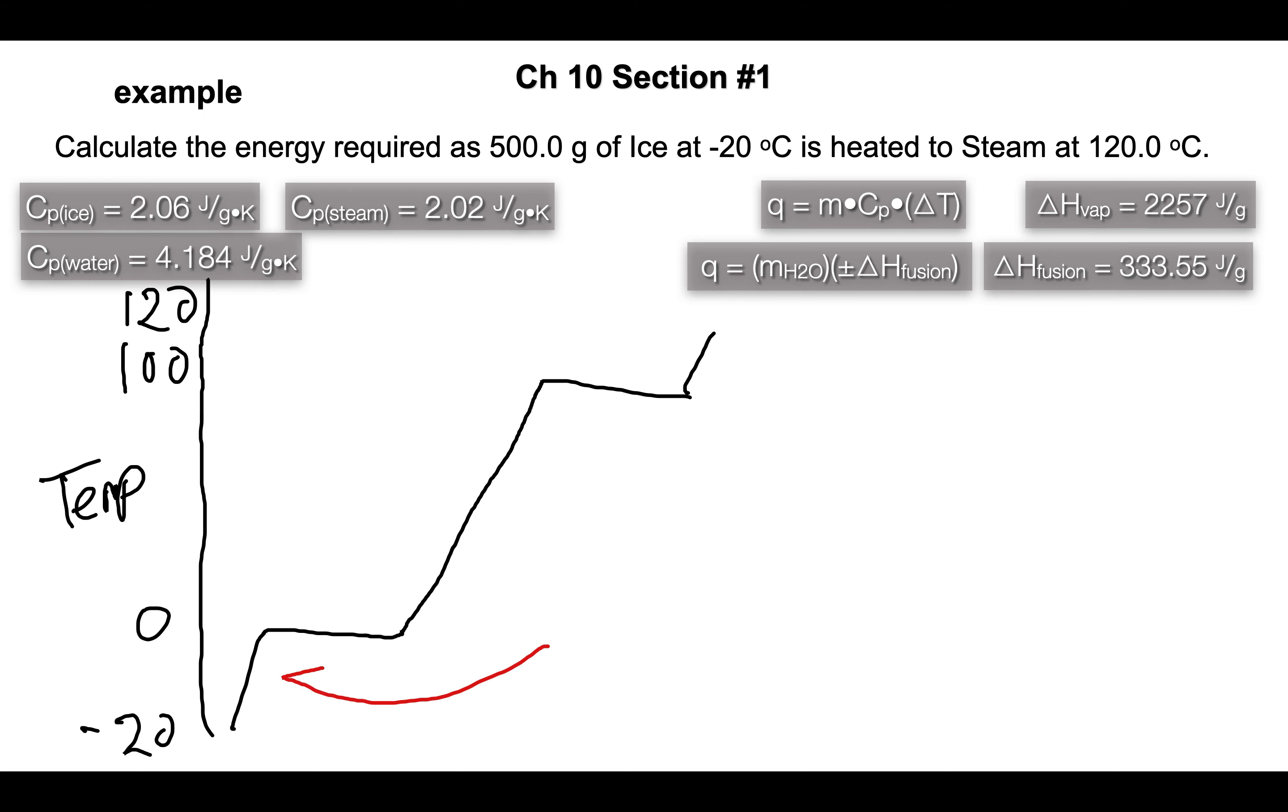So let's say here negative 20 to zero, we're gonna use MCΔT. Our mass is 500 grams and Cp is for ice 2.06 joules per gram per Kelvin. And then delta T was only 20 degrees Kelvin. And again Kelvin and Celsius are the same when talking about the difference.